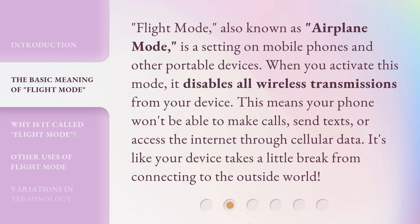Flight Mode, also known as Airplane Mode, is a setting on mobile phones and other portable devices. When you activate this mode, it disables all wireless transmissions from your device. This means your phone won't be able to make calls, send texts, or access the internet through cellular data. It's like your device takes a little break from connecting to the outside world.